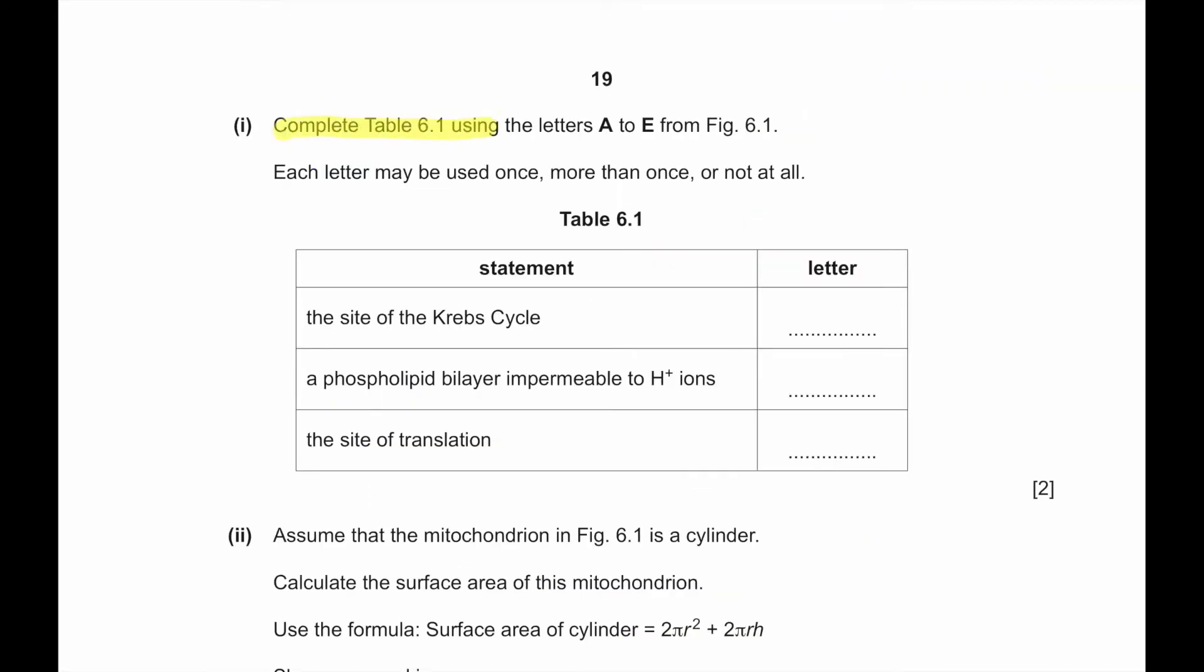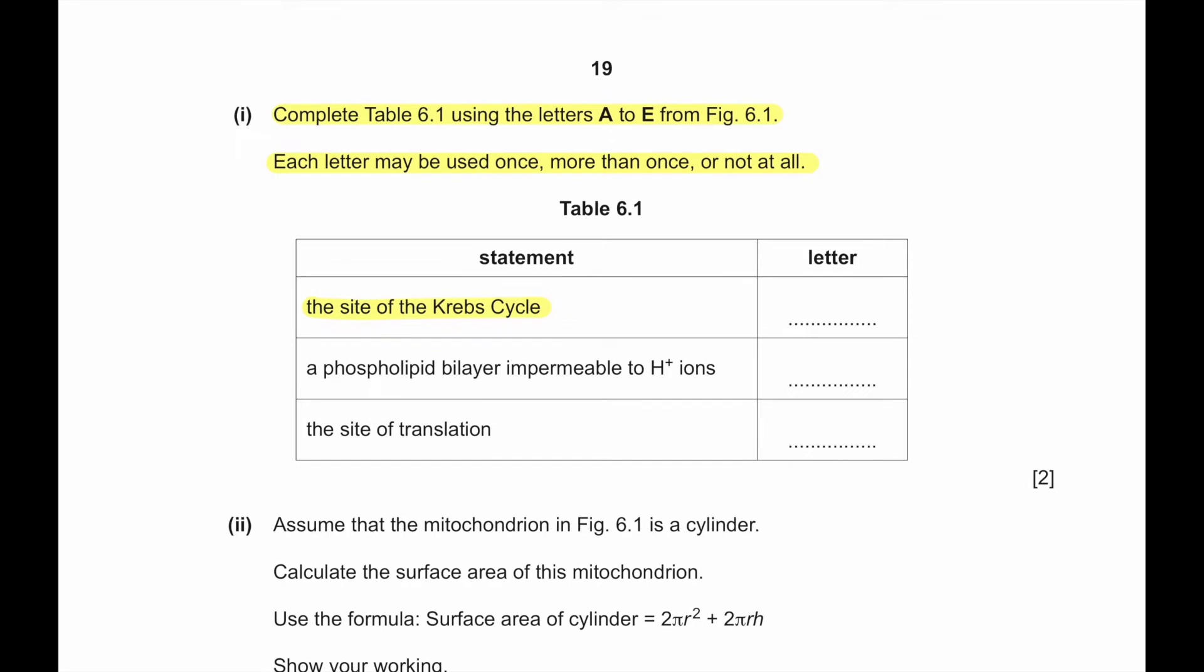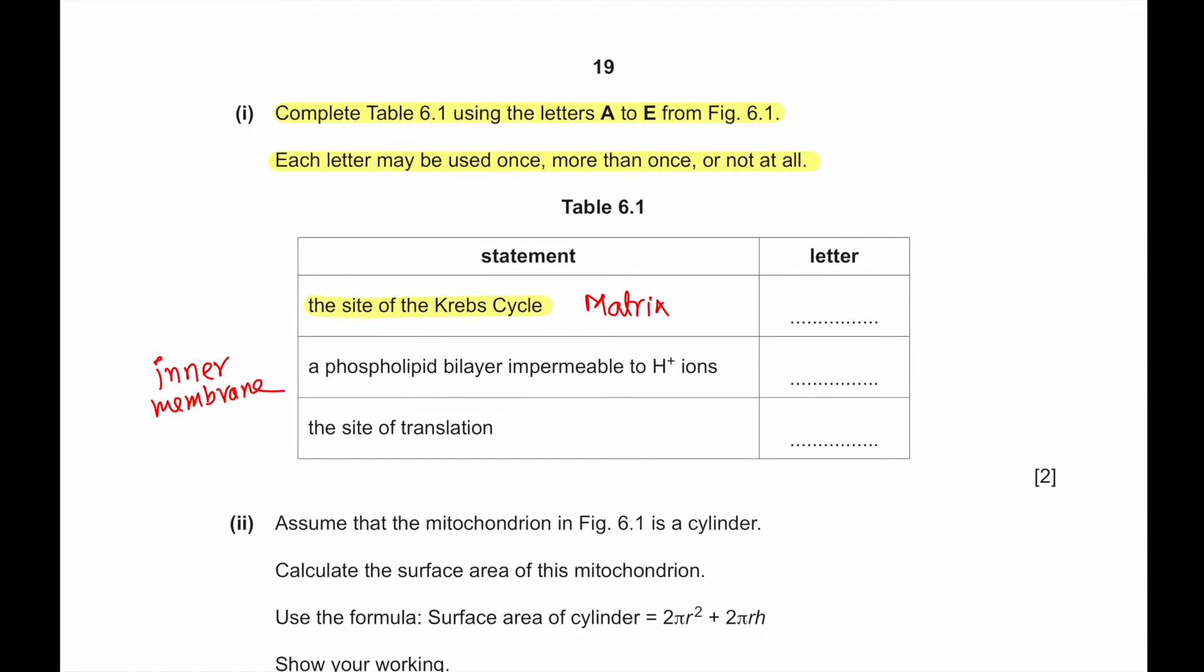The question says complete table 6.1 using letters A to E. Each letter may be used once, more than once, or not at all. The site of Krebs cycle is the matrix, A. A phospholipid bilayer impermeable to H+ is the inner membrane, E or D. The site of translation is the ribosome, C.